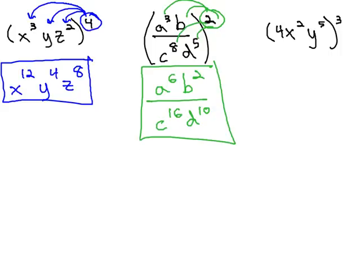This last example is one I see many common errors on. We're cubing the 4x squared y to the 5th. Because it's all multiplied, we put the cube onto each factor. However, we need to remember the cube is an exponent and the 4 is a base. This means we have 4 cubed, or 64.